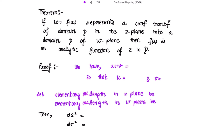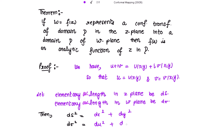Those are the Cauchy-Riemann equations. So we have u + iv = u(x,y) + i·v(x,y), where u and v depend on x and y variables — u is a function of x and y, and v is a function of x and y. Let elementary arc length in the z-plane be ds, and elementary arc length in the w-plane be dσ. Then ds² = dx² + dy² and dσ² = du² + dv².